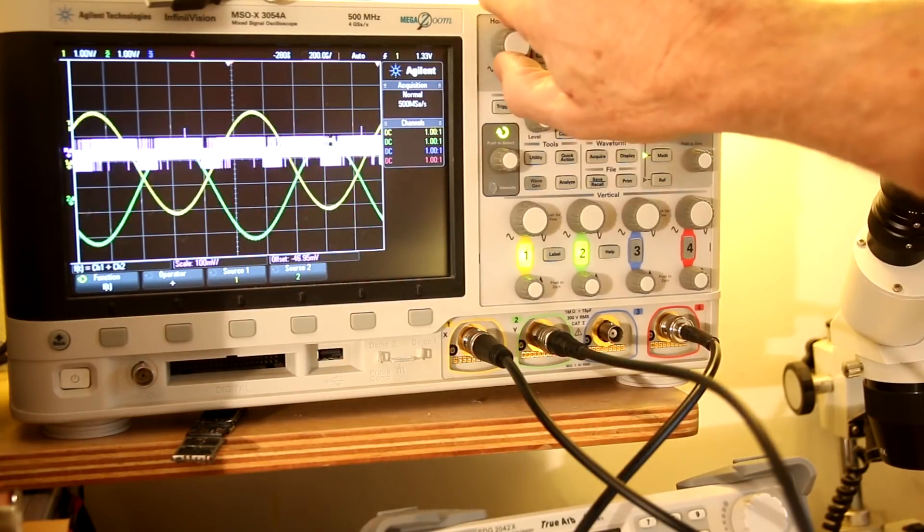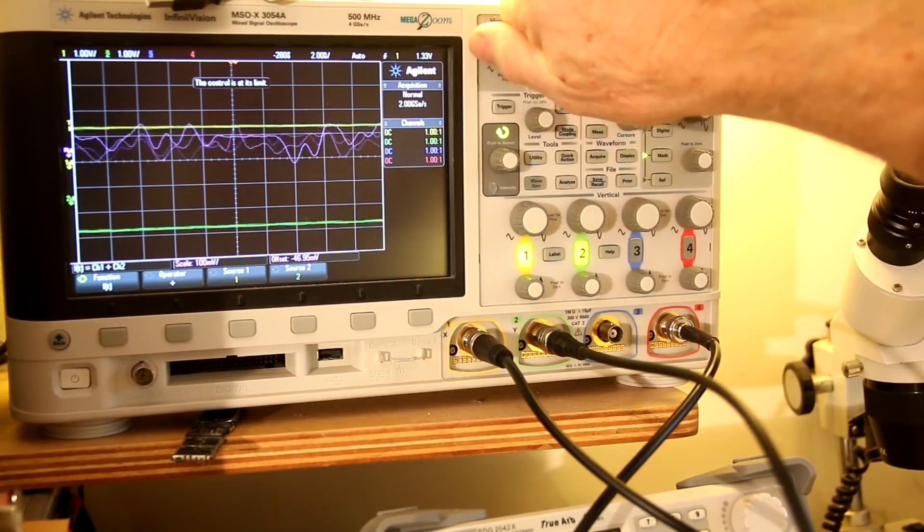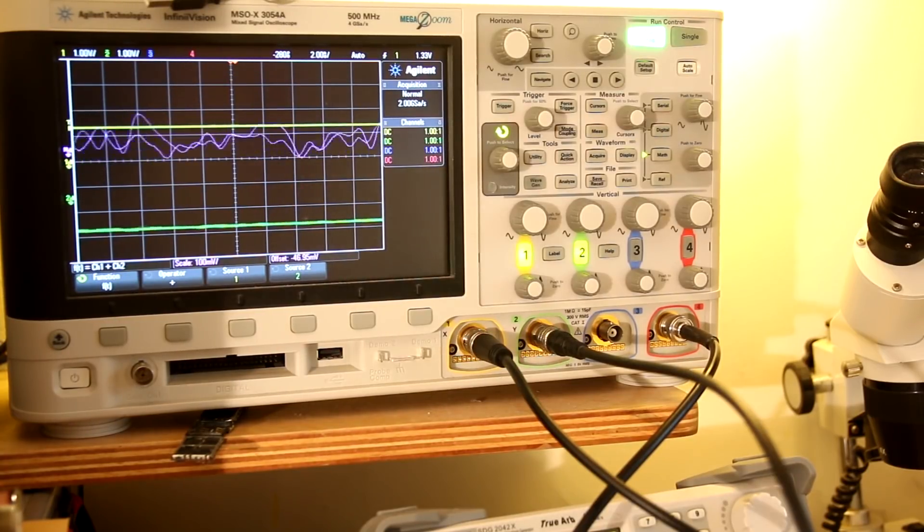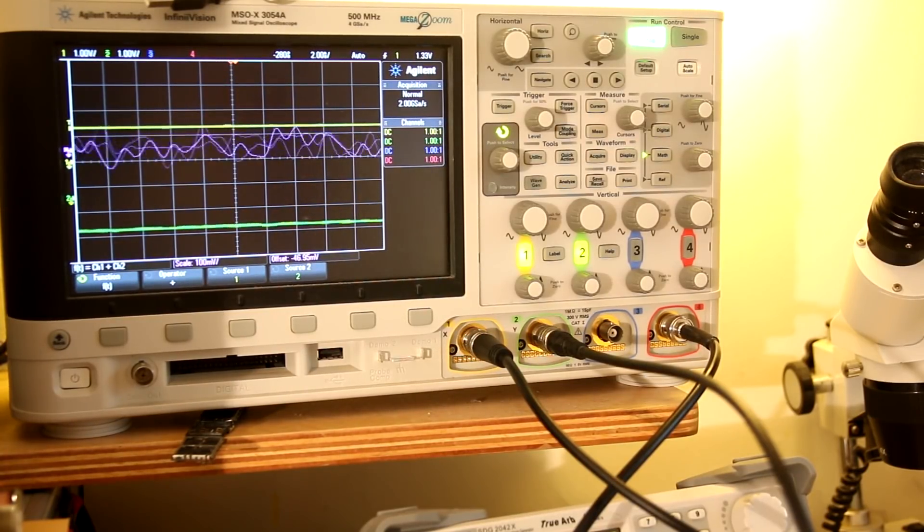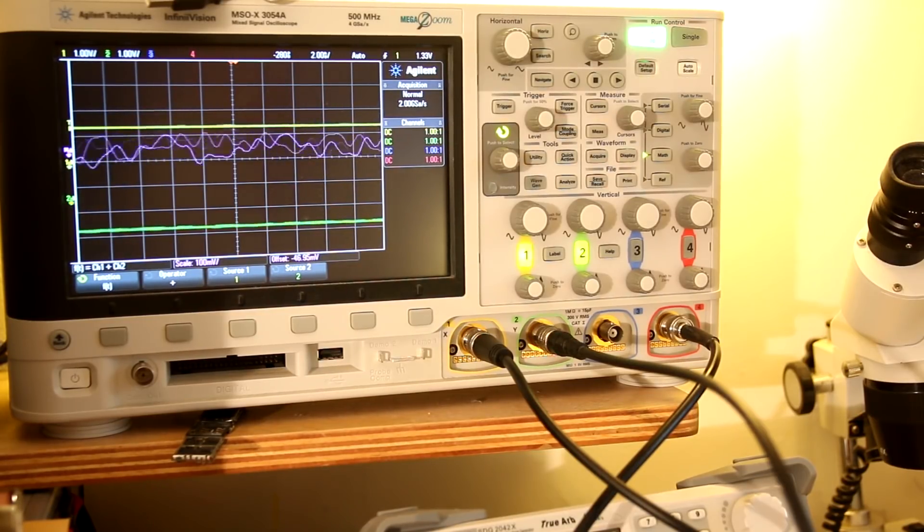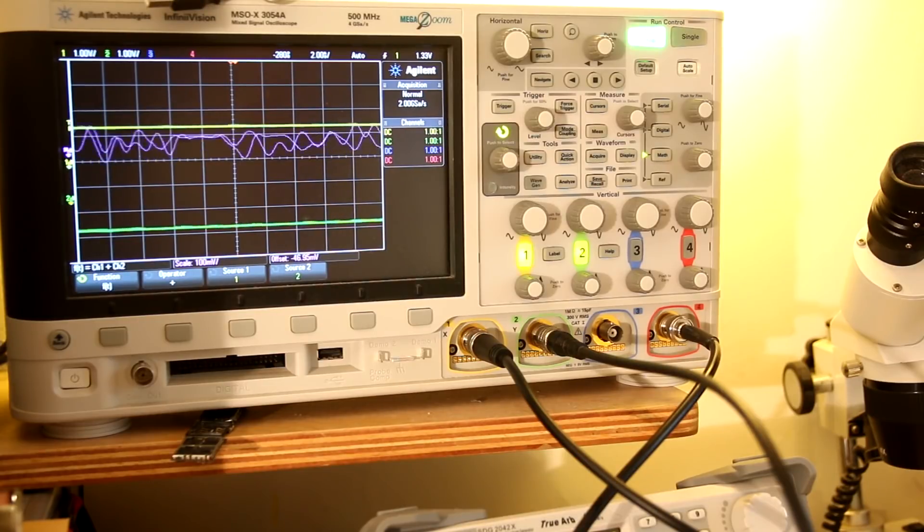If I crank the sweep rate up to 2 nanoseconds per division, you can see that the sample rate is something like 250 picoseconds. But you can see quite a bit of signal in between them. This particular scope is now sampling at 4 billion samples per second, which pretty closely corresponds with what we're looking at here.